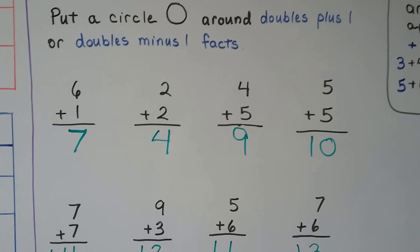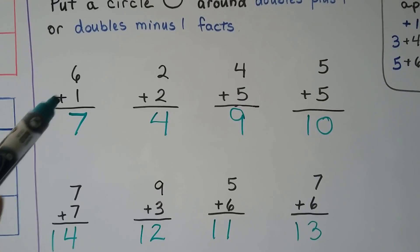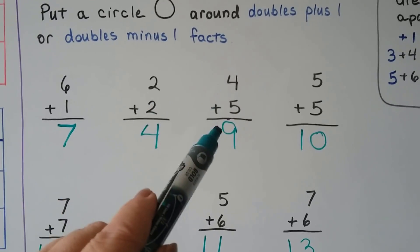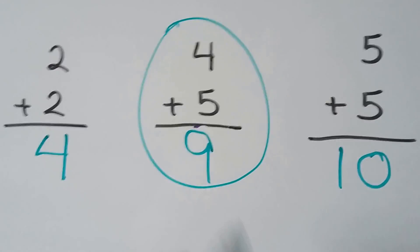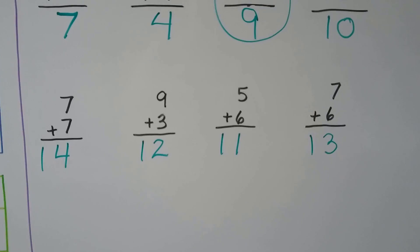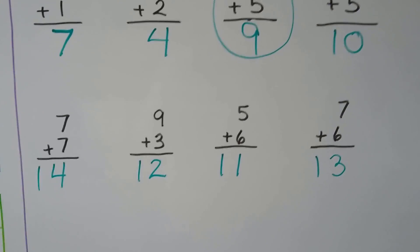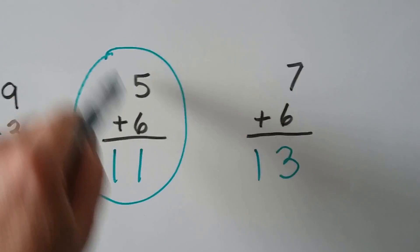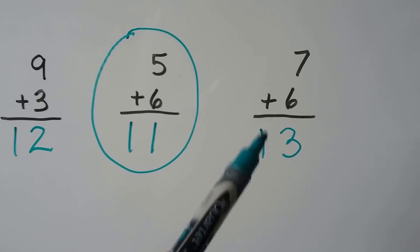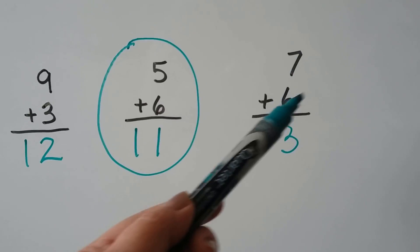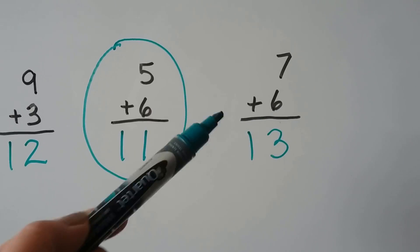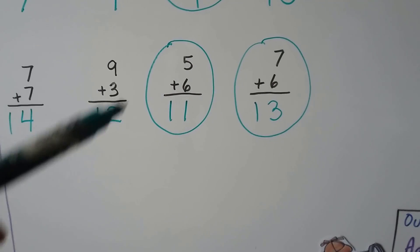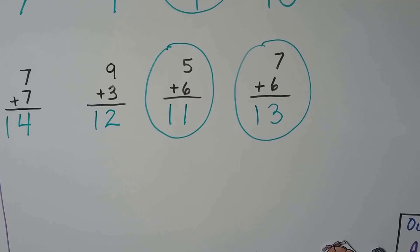Now we need to put a circle around all the doubles plus one or doubles minus one facts. Six plus one was a count on — we started with six and counted on one. Two plus two is a doubles, but not a doubles plus one or doubles minus one. Four plus five was a doubles plus one — we did four plus four plus one to get nine. Five plus five is a doubles, not a doubles plus one or minus one. Nine plus three was a count on. Seven plus six was a doubles minus one because the second addend is one less than the first addend. Five plus six was a doubles plus one because the second addend is one more than the first addend.